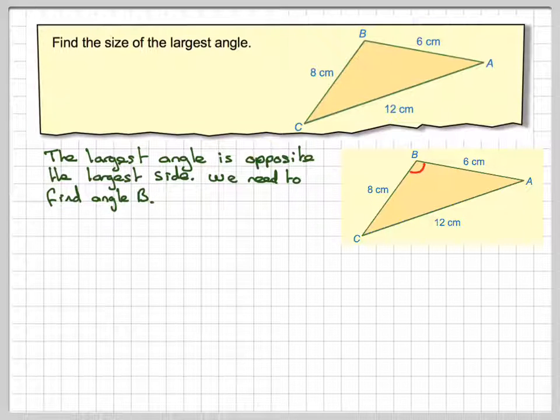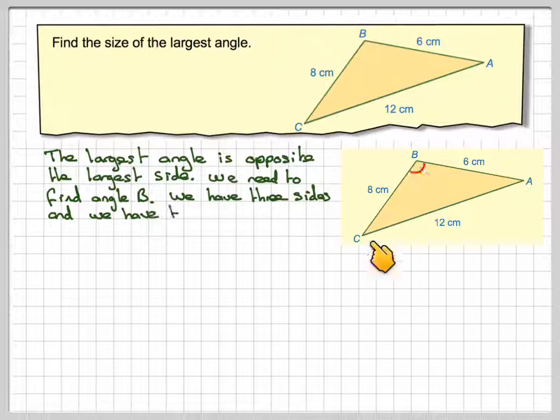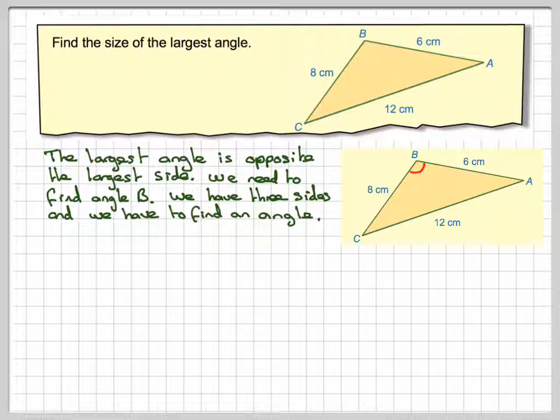Okay, we need to find angle B, and we have three sides, three known sides, and we have to find an angle. For this, you cannot use the sine rule, and therefore, I'll just stop the video for a minute and see if you can use the sine rule. You'll see that it's not possible.